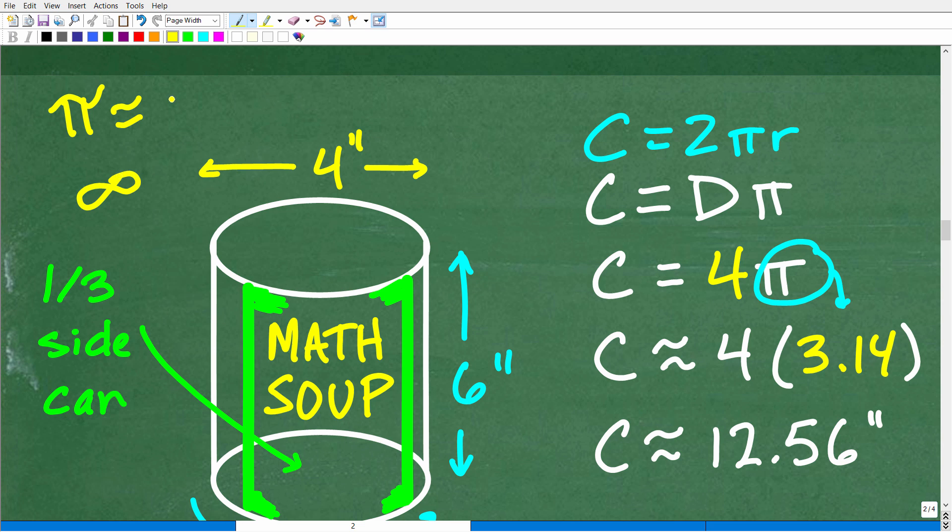So we obviously can't write down all the digits of pi. So you're going to have to make an estimation. Now, the more digits of pi that you use, the more accurate your answer is going to be. But nevertheless, if you choose to use an approximation for pi, your answer will be an approximation as well.